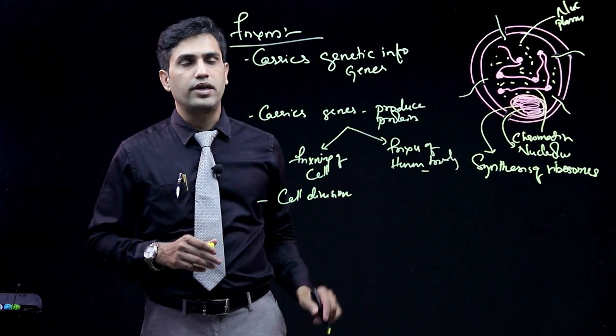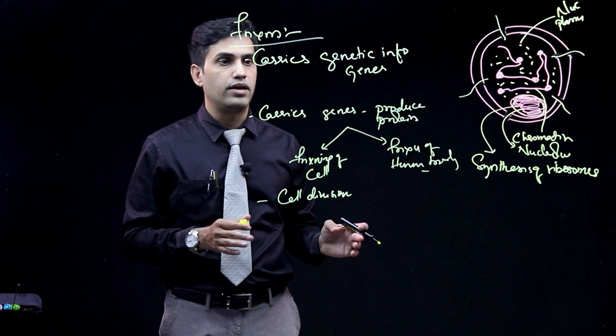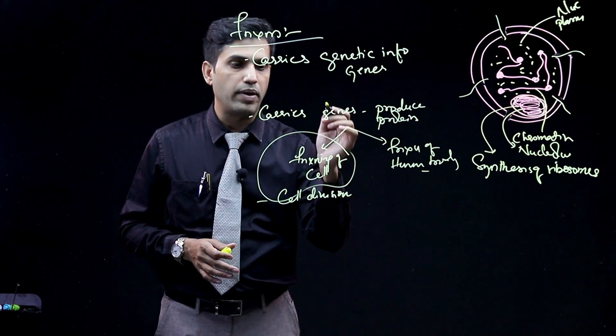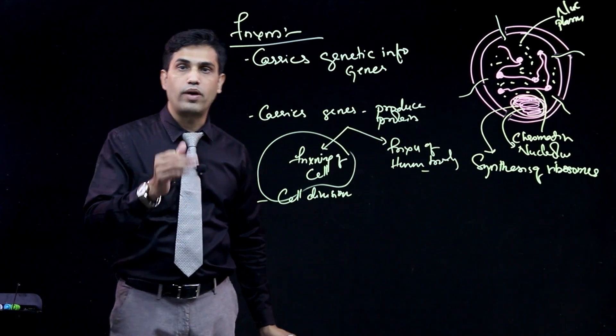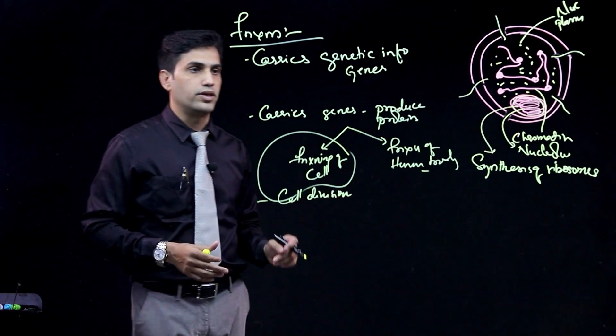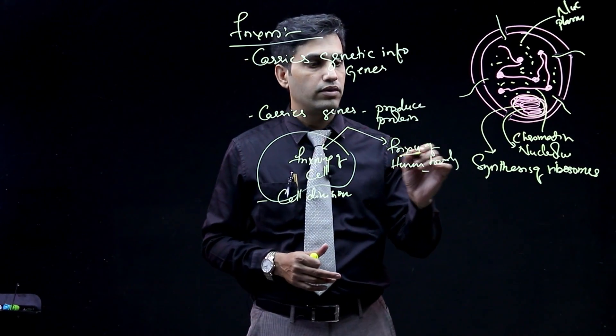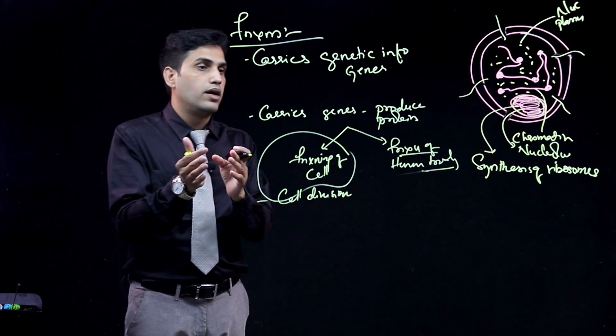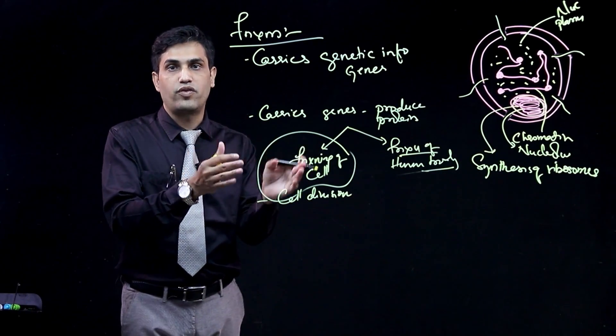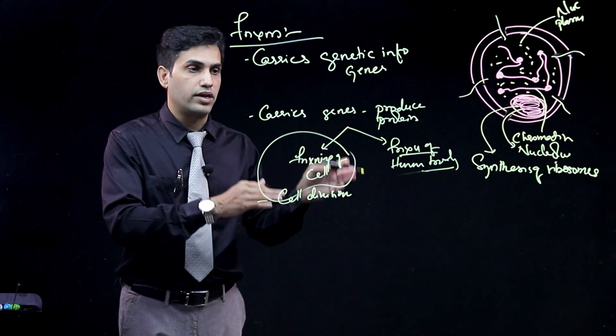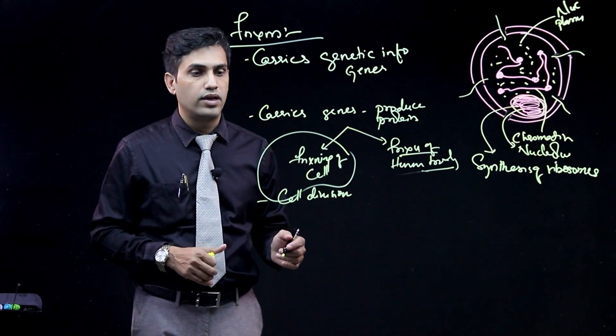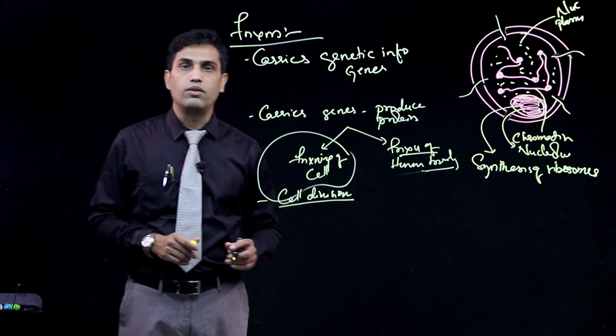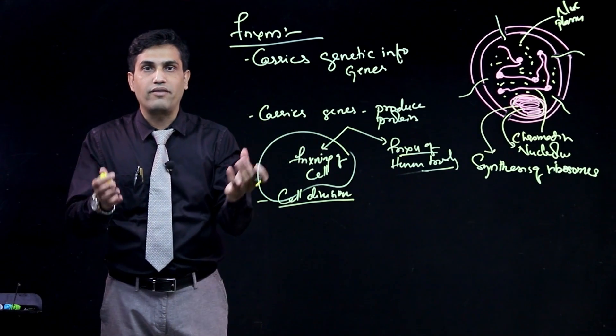Basic function is it carries the genetic material. Next, it maintains the cell function - how? By preparing proteins which are required for the cell to function as a whole. For the functioning of human body, it can also produce - as a compartmental organ - it can do its function, it can produce its specific protein or it can do its specific function. Then it is required for cell division.